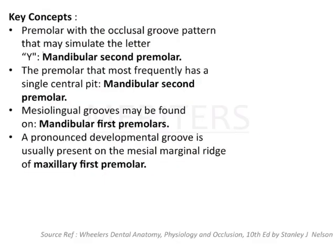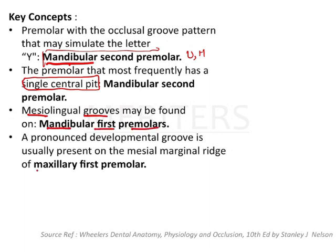The mandibular second premolar shows Y, U, and H groove patterns. The premolar that most frequently has a single central pit is the mandibular second premolar. The mesolingual groove can be found on the mandibular first premolar, but it is not seen in the second premolar.